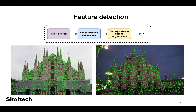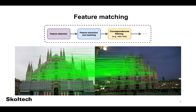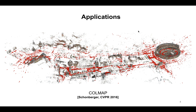In our work, we address the problem of feature detection, also called keypoint detection, which is the first step in pipelines that are based on sparse local features. The usual sparse local features pipeline includes detecting points of interest on images and supplying them with descriptors. Then, features are matched by their descriptors and correspondences are obtained. Subsequent utilization of correspondences depends on an application, for example, structure from motion or SLAM.